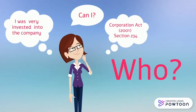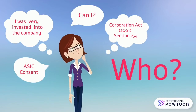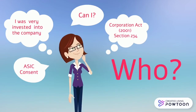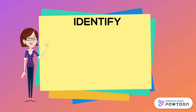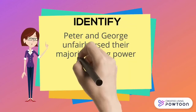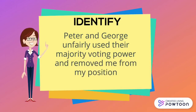Luna was heavily invested in the company by being one of the only shareholders and directors of Supreme Flooring. Under Section 234 of the Corporations Act, being a formal member with ASIC consent, Luna can apply to the courts for remedy alleging oppressive action from both the company and directors, Peter and George. Luna has identified the oppressive conduct of Peter and George, who as brothers hold majority voting power, using it to remove her from the Board of Directors, especially after her allegations of George breaching directors' duties.